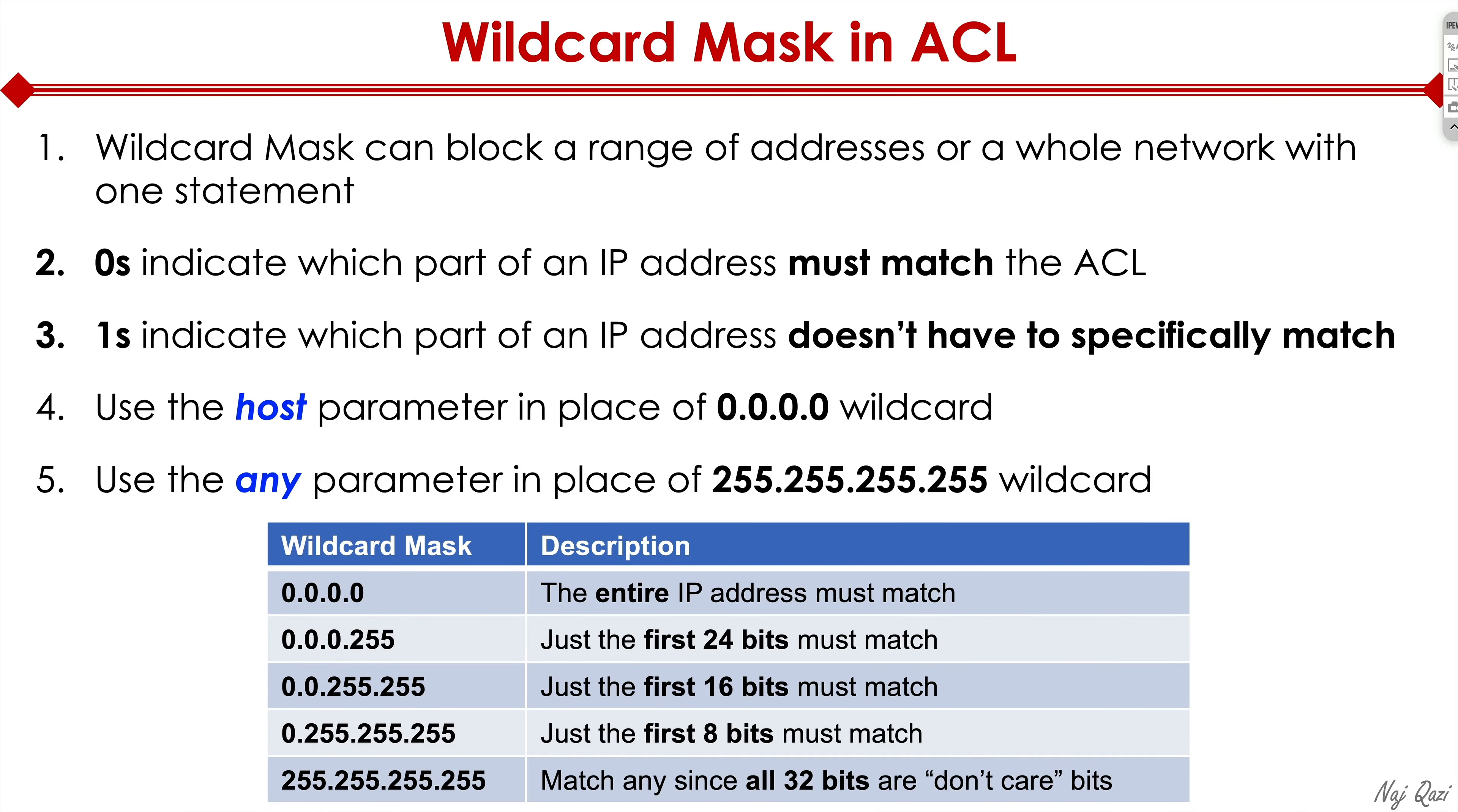Now let me do quick whiteboarding to explain wildcard mask compared to the standard subnet mask that we are used to. If you look at a subnet mask, let's say a slash 8 subnet mask, what do we have? We have 255.0.0.0. If you have slash 16, that's 255.255.0.0. And if you have slash 24, that is 255.255.255.0.